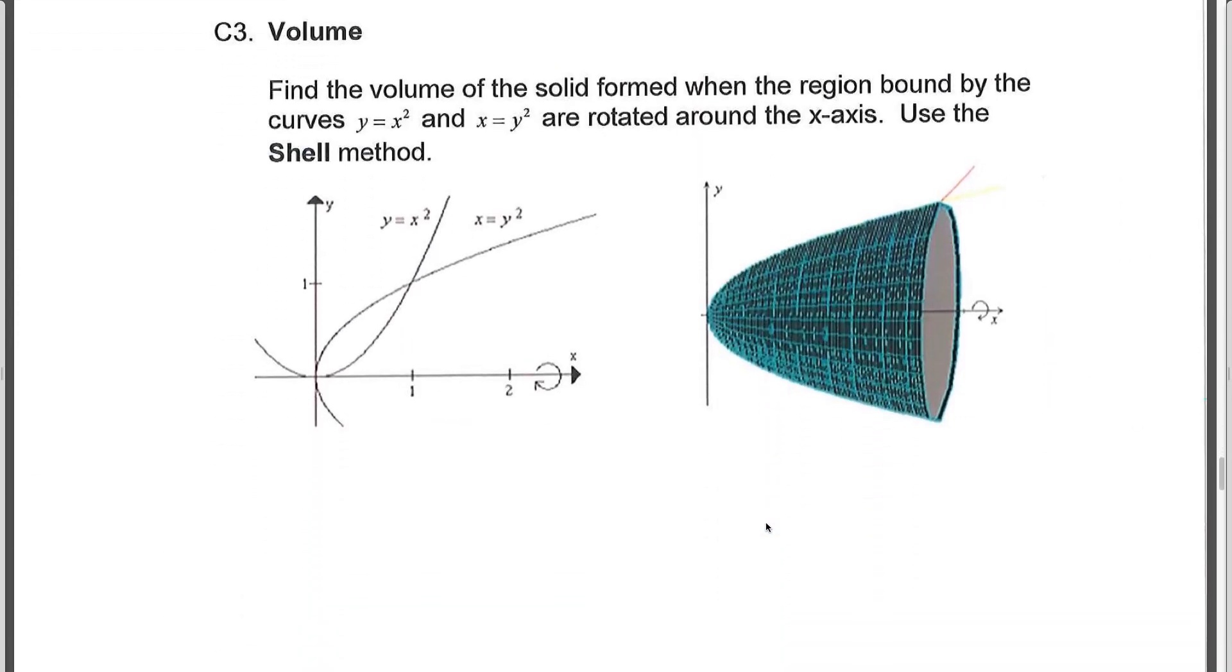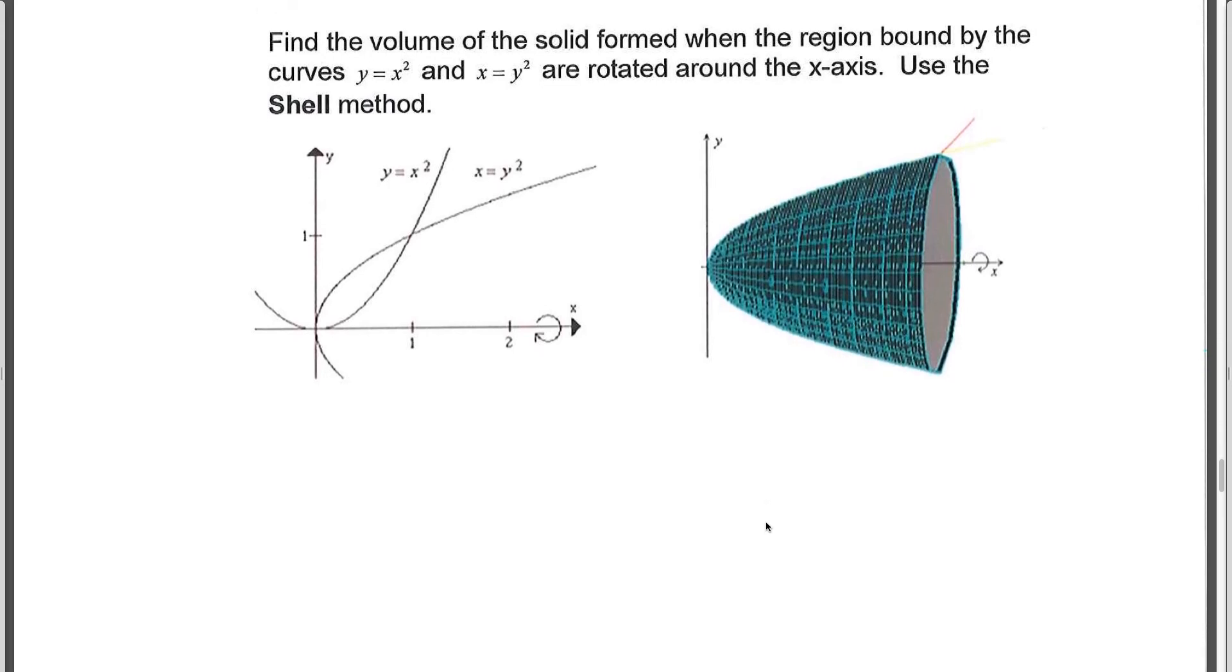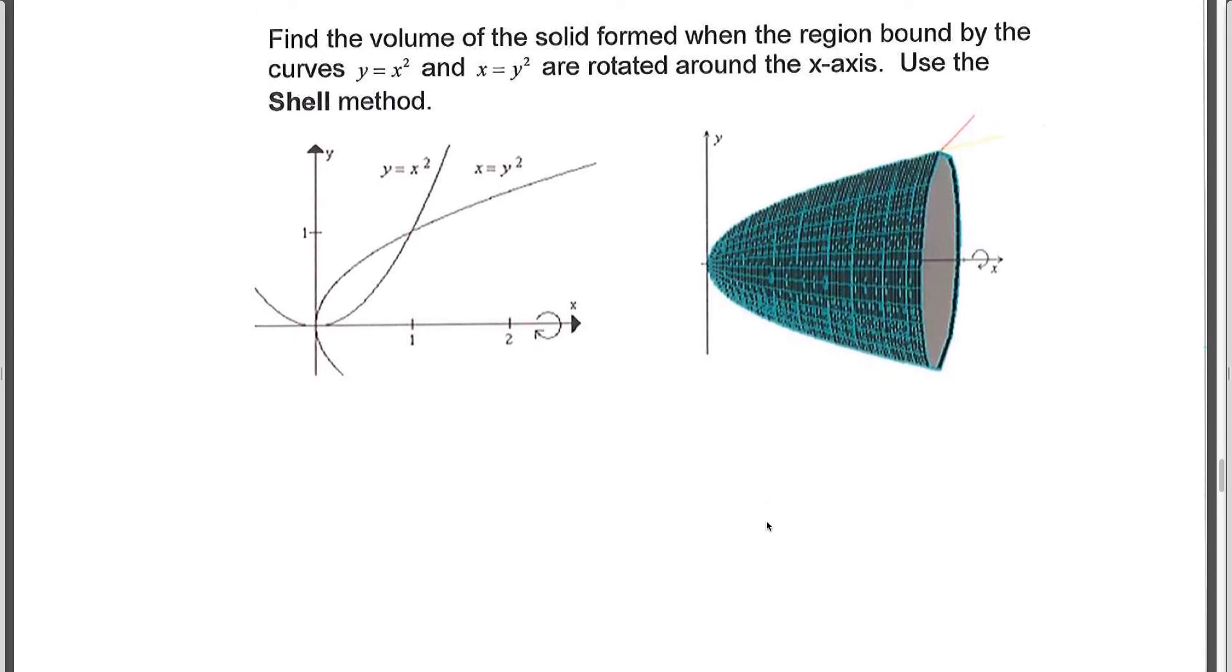The final example we'll do in this video is a volume question. And we're asked to find the volume of the solid formed when the region bound by these curves is rotated around the x-axis. So here's our rotation. And we want to use the shell method. And this is the shape that we're going to generate here. The shell method tells me I need a parallel rectangle. So there's my rectangle. That is immediately a dy rectangle.